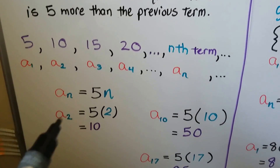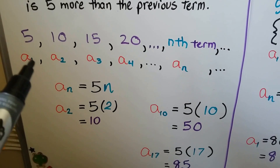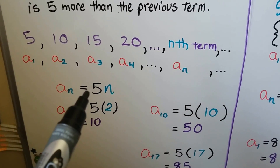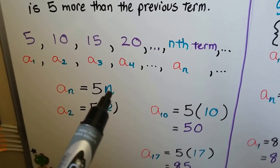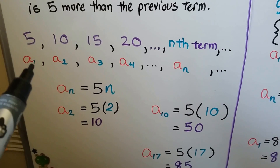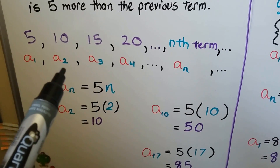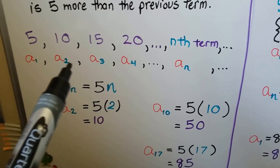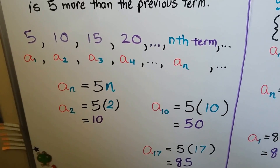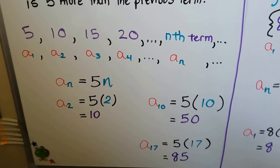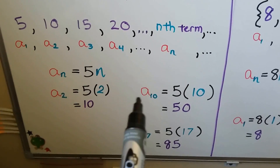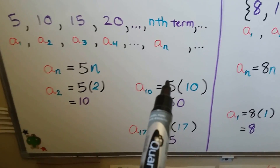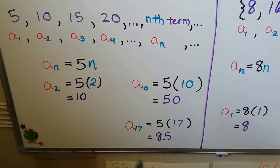For the first one, we've got a 1 as our subscript, so that's going to be five times one — that's a five. For this one, we have a 2 for the subscript, so it's going to be five times two — that's going to give us the ten. So we could find the nth term — how about the tenth one in the list? We would do five times ten. That would give us fifty.